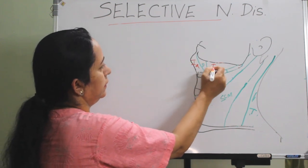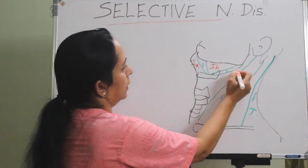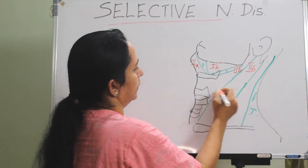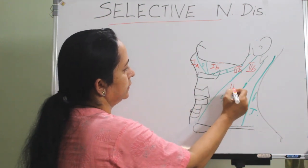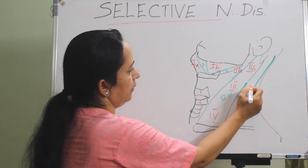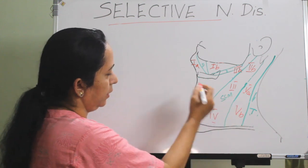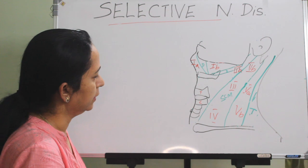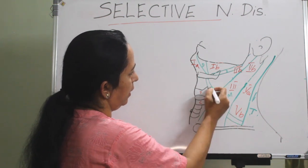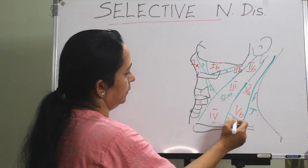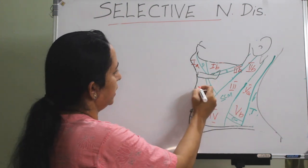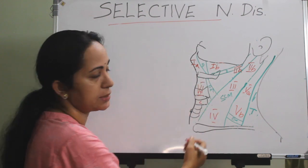Reviewing the levels of lymph nodes: level 1A and 1B; then 2A and 2B; then level 3; the thyroid-cricoid landmark separates level 3 and 4; level 4; then 5A and 5B — the omohyoid muscle is a landmark here; level 6 is the anterior or central compartment; and level 7 is the superior mediastinal group.